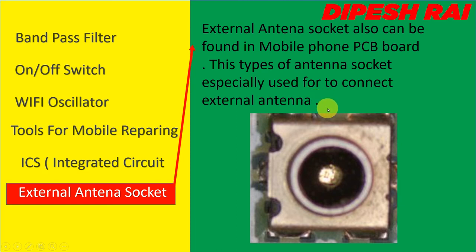Today we discussed the bandpass filter, on/off switch, Wi-Fi oscillator, tools for mobile repairing, ICs, and external antenna socket. If you have any confusion about these small components — and note that some new types of smartphones may not have all these components — you can comment in the comment section and I'll try to answer your questions. If you want to know more about ICs, let me know and I'll make a separate video on that topic. I'll come back with another new video — until then, goodbye, see you again.